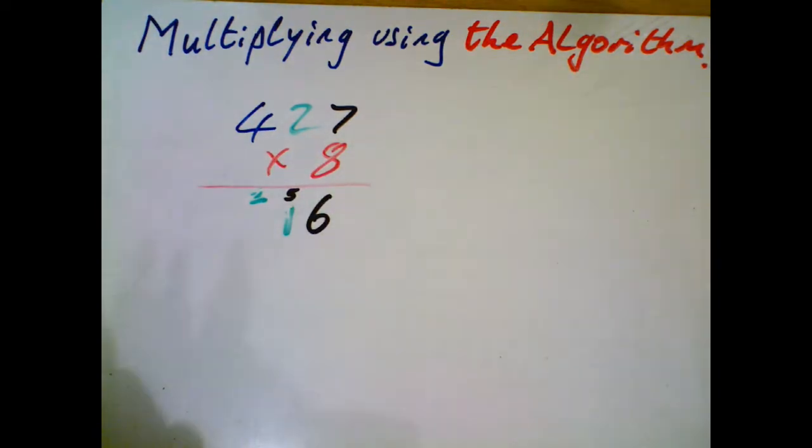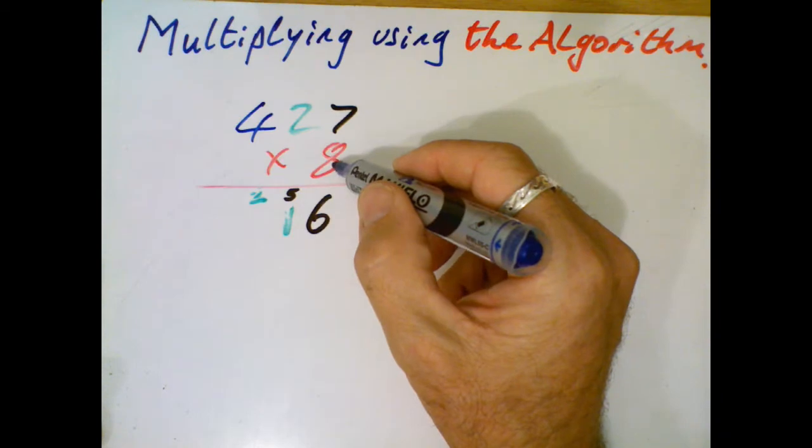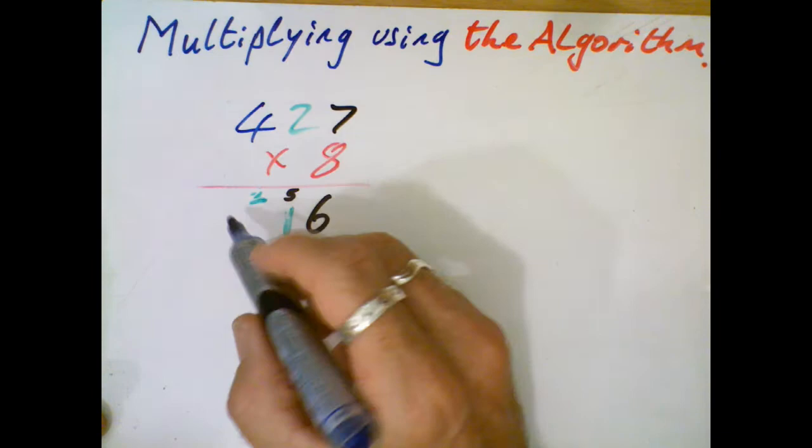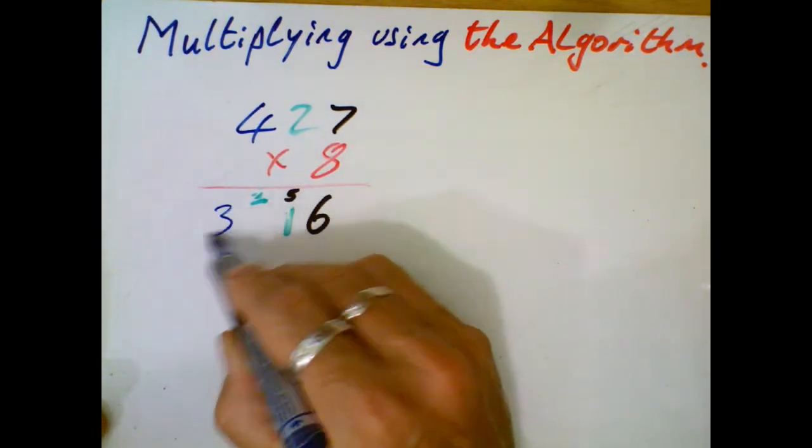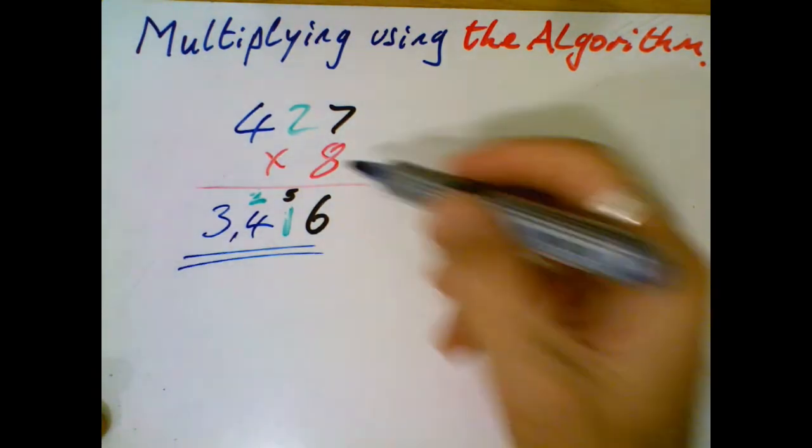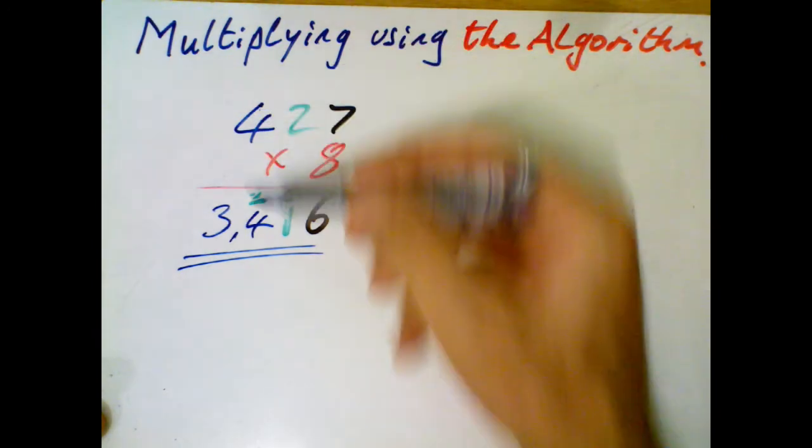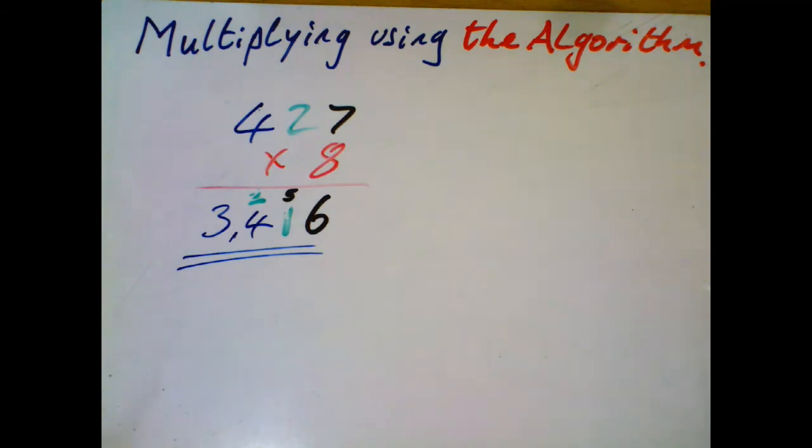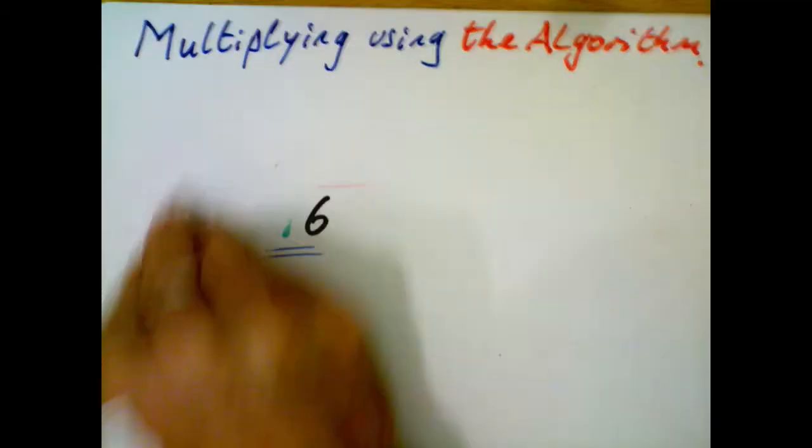And 4 times 8, 32. So 400 times 8 would be 3,200. So 32 plus I got the 200 here, 34. Okay, let's see if that looks about right. Well, 4 times 8 is 32, 3,200. We're pretty close to 3,200. So that must be right. Yeah? Okay, so that's a three-digit number by a one-digit number. That works quite well.